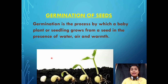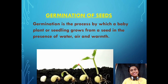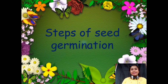As you can see in this picture, here is a seed, and step by step the baby plant is growing from the seed — producing a shoot, producing roots, and gradually growing up. Now we will study the steps of seed germination in detail.